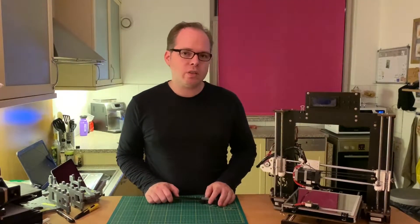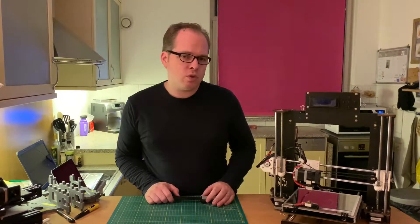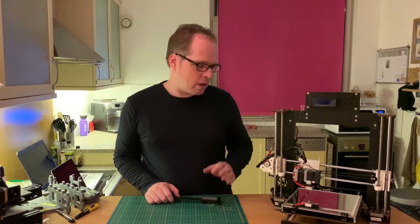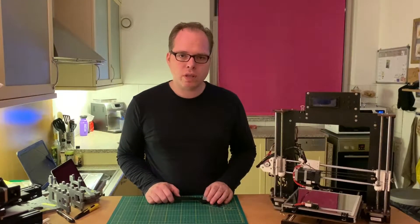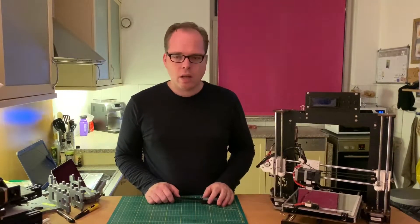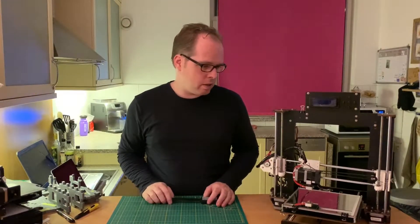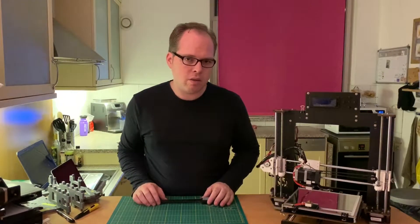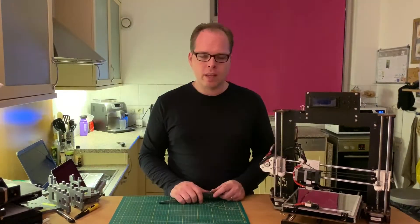More updates on this CTC Prusa i3 MK2 3D printer are coming up. Now I am also going to make some adjustments or some modifications to the housing of this 3D printer. I am thinking about making some metal aluminum studs. So this is going to be not out of laser cut plywood but out of aluminum.